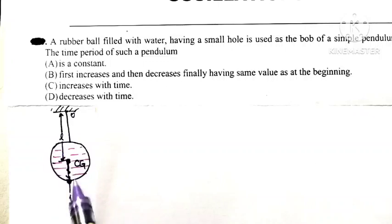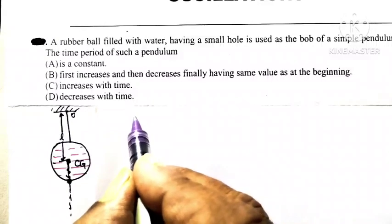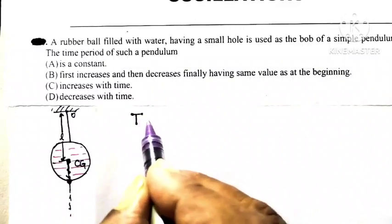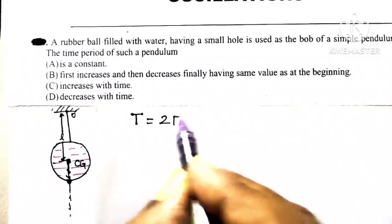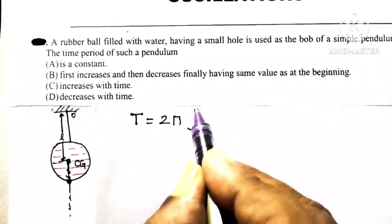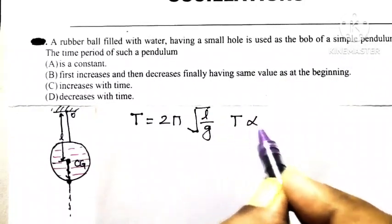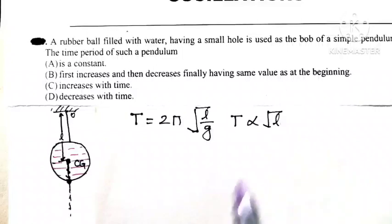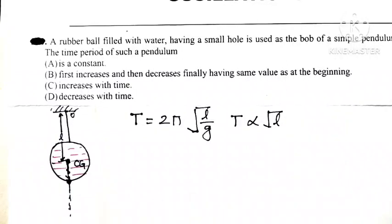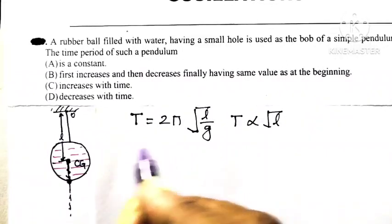As far as the time period, this ball is having a hole at the bottom. Now the time period of a simple pendulum is given by formula T = 2π√(l/g), means the time period is directly proportional to square root of length of bob.